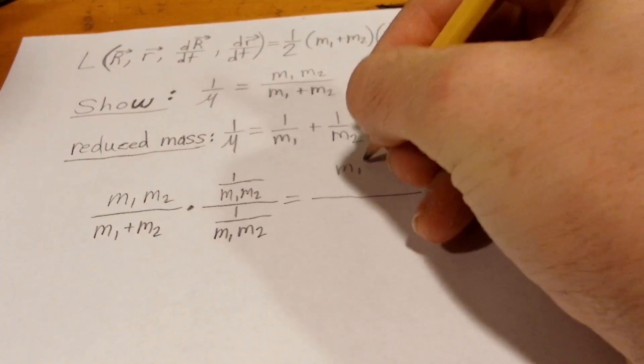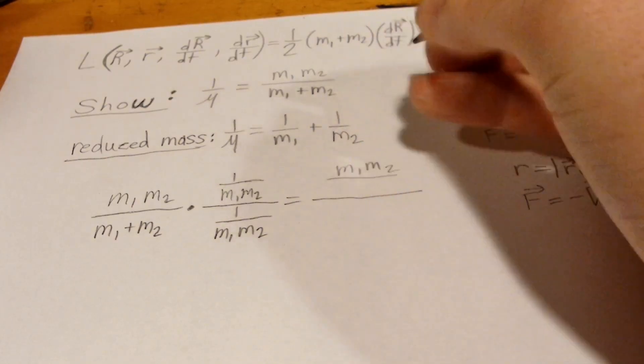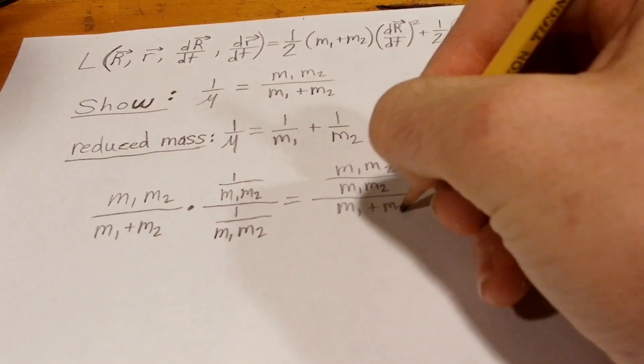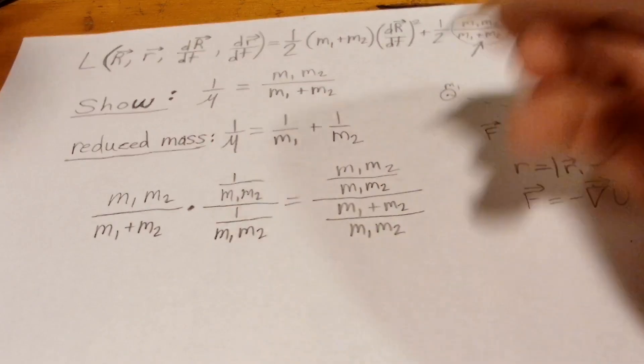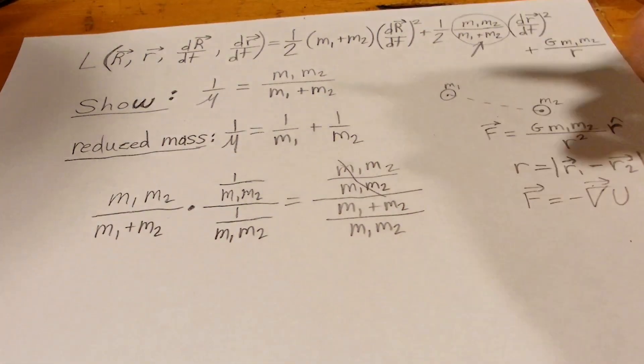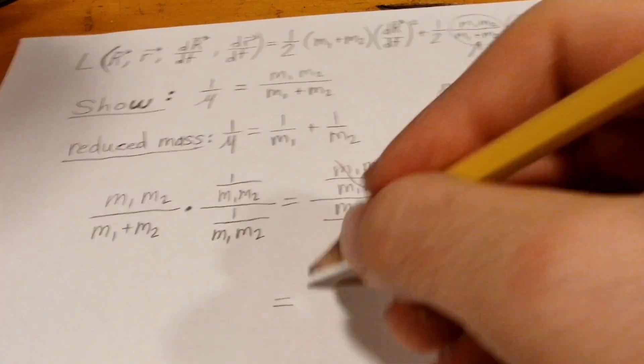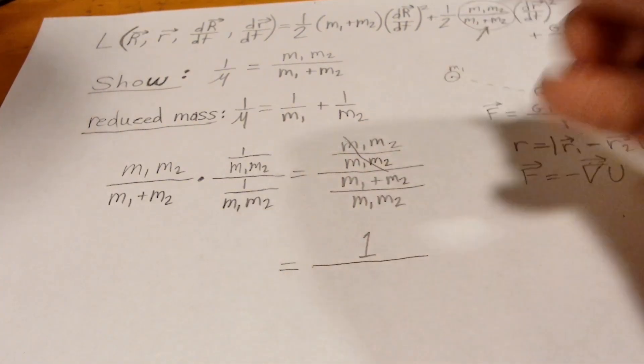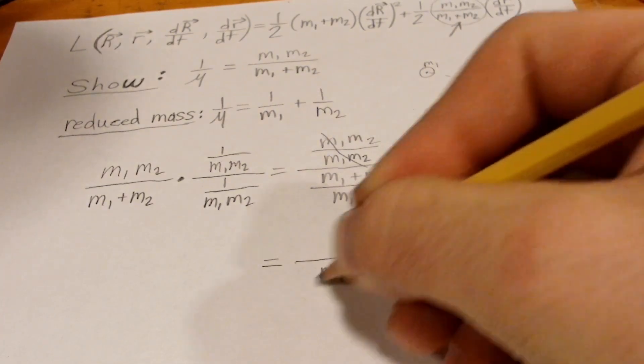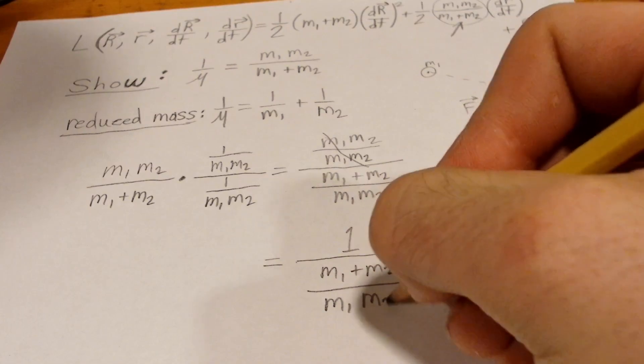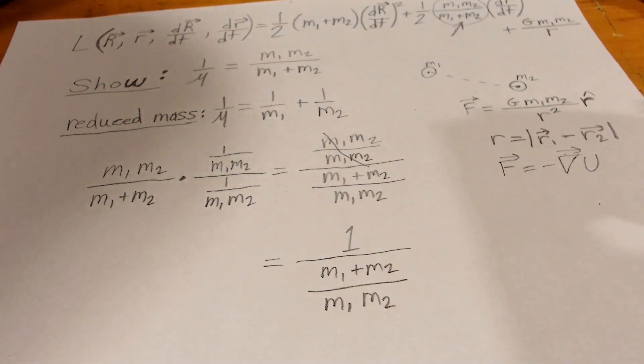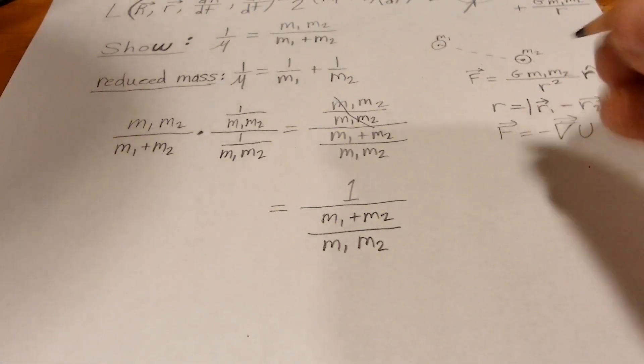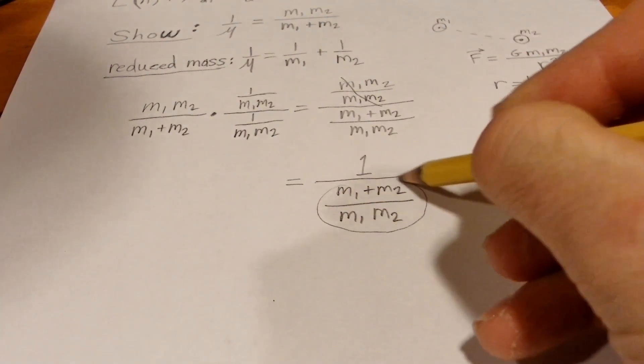And so, this is therefore equal to m1 times m2, over m1 times m2, and we got m1 plus m2, all over m1 times m2. The top here cancels. So we got m1 plus m2, all over m1 times m2. And now we want to just break this up and only strictly look at this here